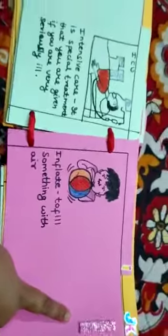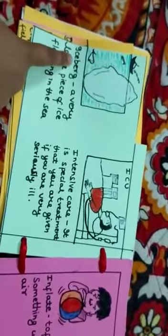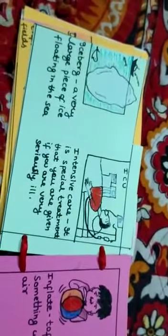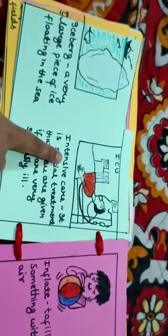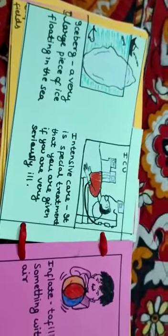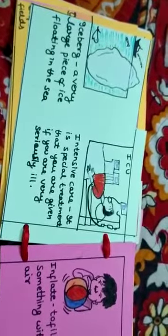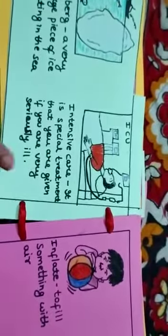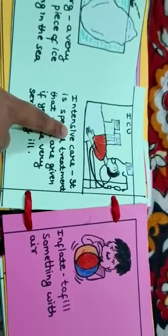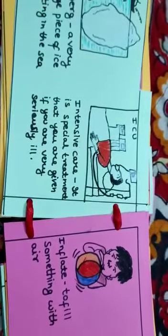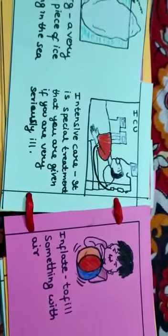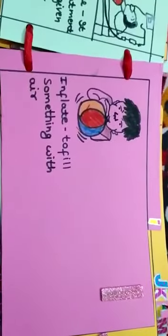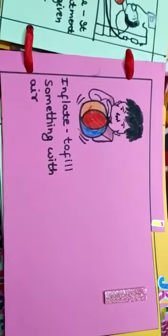The next alphabet is I. The first word is iceberg, a very large piece of ice floating in the sea. As was shown in the Titanic movie, the Titanic ship hit the iceberg. The second word is intensive care. It is special treatment given if you are very seriously ill or have been through an accident, then you go to an ICU. The third word is inflate, which means to fill something with air like a balloon.